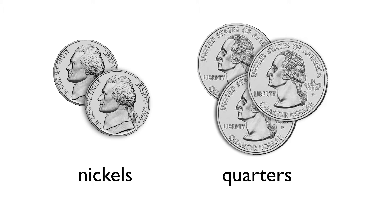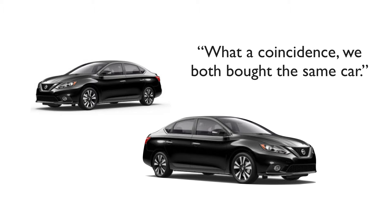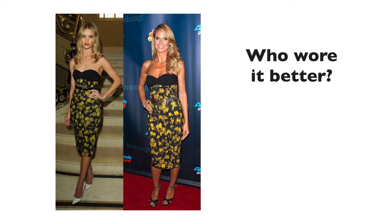If I'm adding up my money, I care about how many tokens I have, because I'm adding each individual token. But sometimes what we care about is the type. If you and I both bought the same make and model of a car — say, the 2016 Nissan Sentra — I'd say, 'What a coincidence, we both bought the same car.' That refers to the car type, not the car token. Similarly, if two women show up to a party in the same dress, there are two distinct dress tokens, but they're instances of the same dress type.